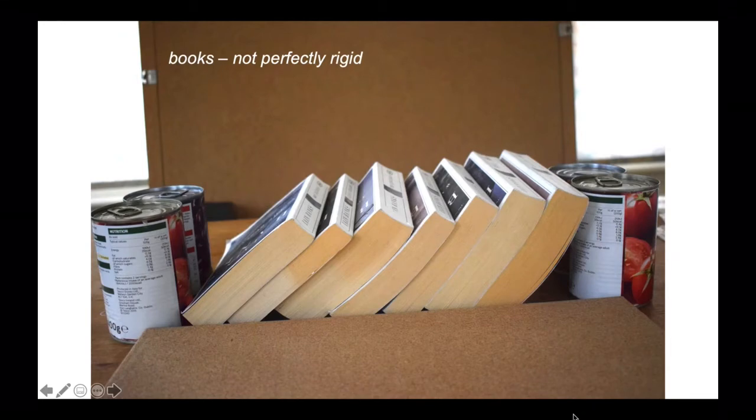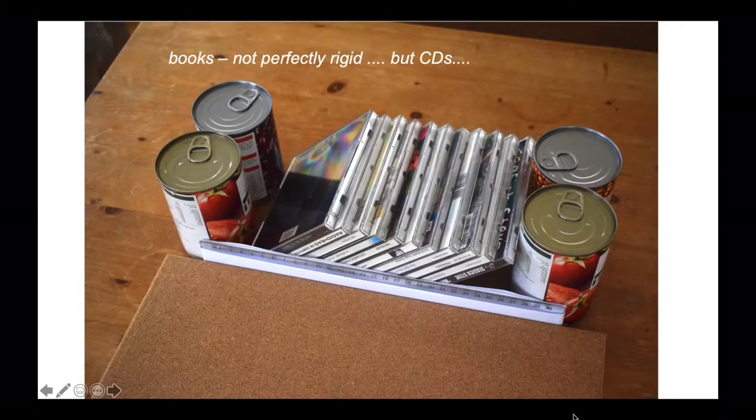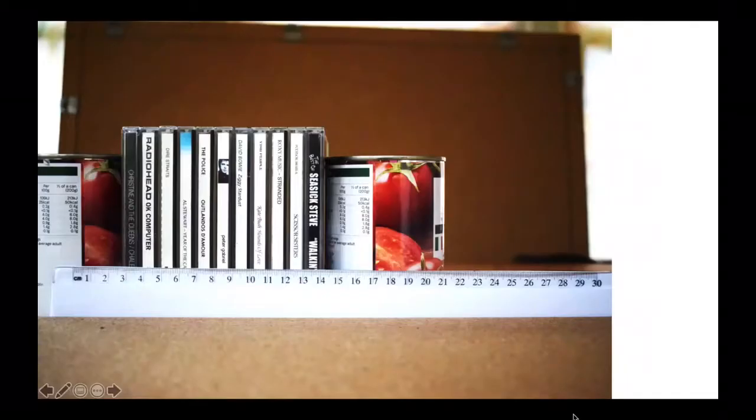So that's books. Books are not perfectly rigid, but CD cases or DVD cases, they're much better. Let's have a look at setting these up. What we're going to do now is quantify the relationships between the amount of extension and the rotation of the CDs, our proxies of fault blocks.